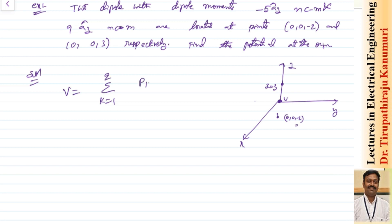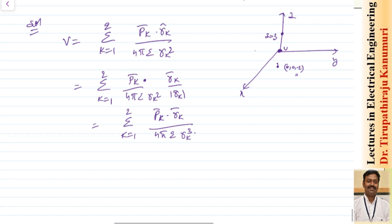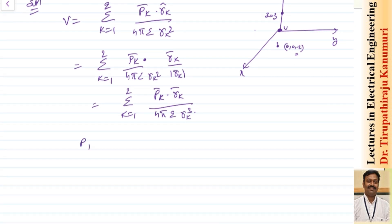To calculate this, we already know V is equal to the summation over k from 1 to 2 of the dipole moment P_k dot the unit vector in this direction divided by 4 pi epsilon into r_k squared. Or this can be further simplified as the summation of P_k divided by 4 pi epsilon naught r_k squared multiplied by r_k vector divided by its magnitude, which gives P_k dot r_k divided by 4 pi epsilon into r_k cubed.